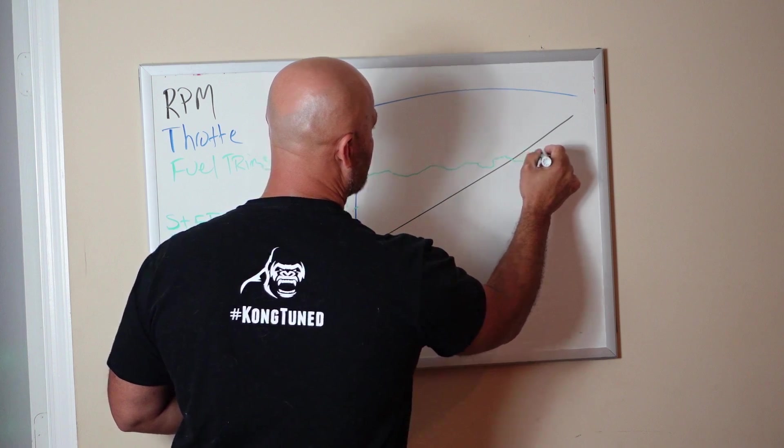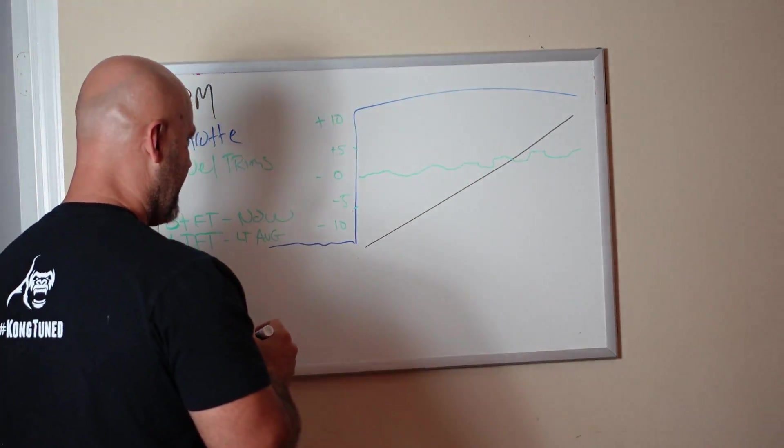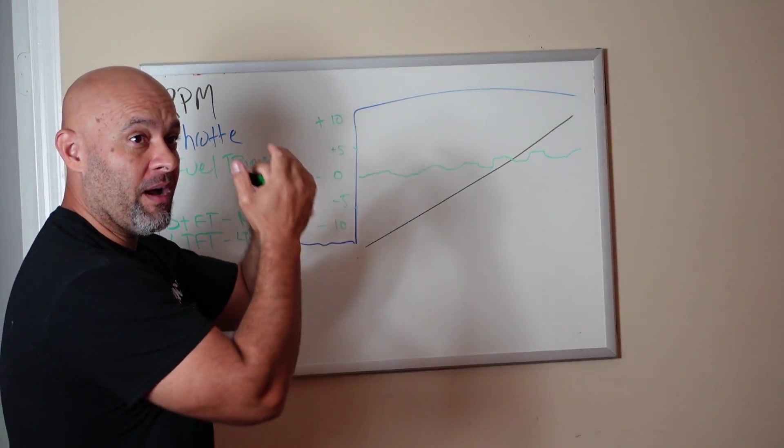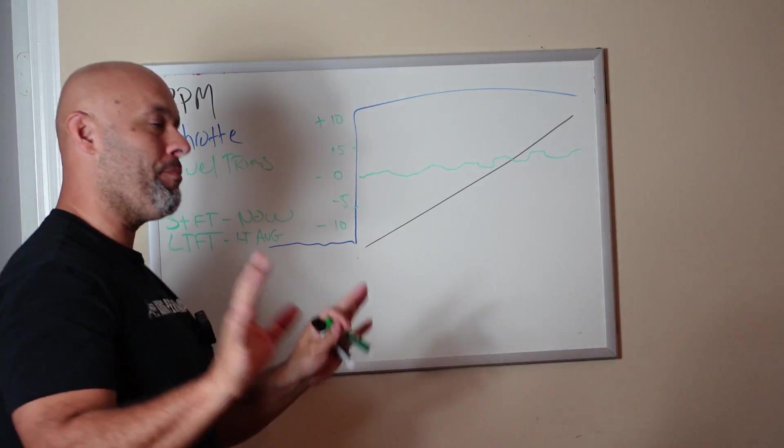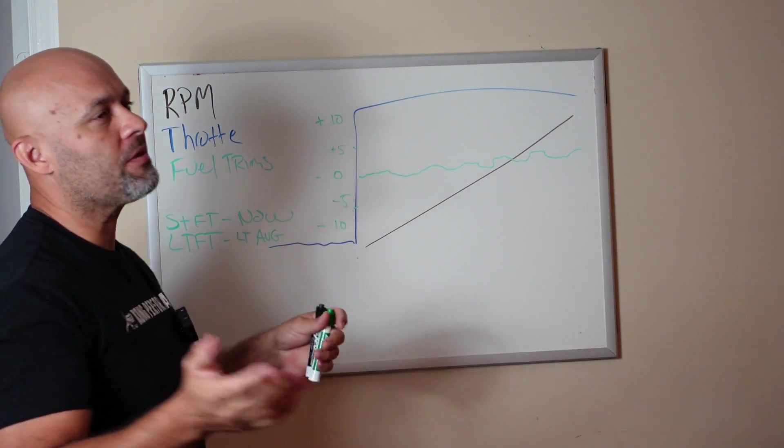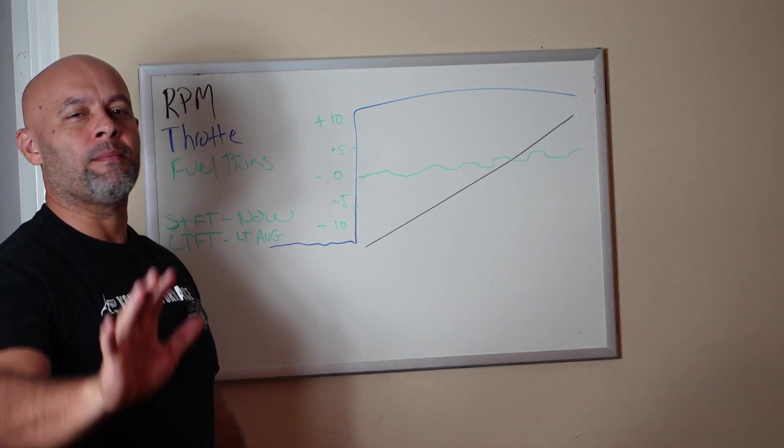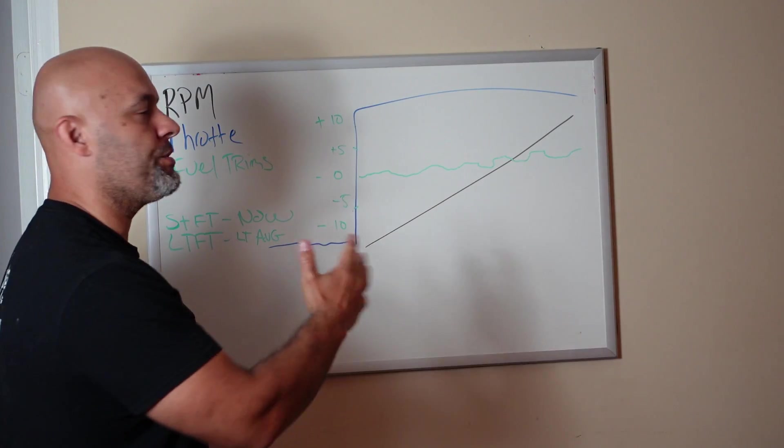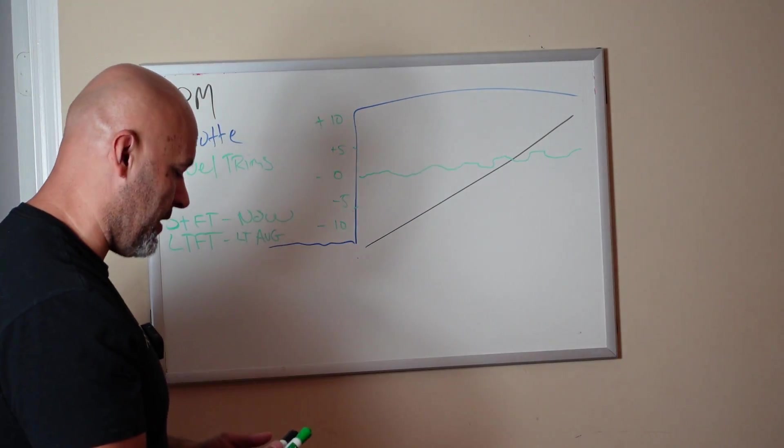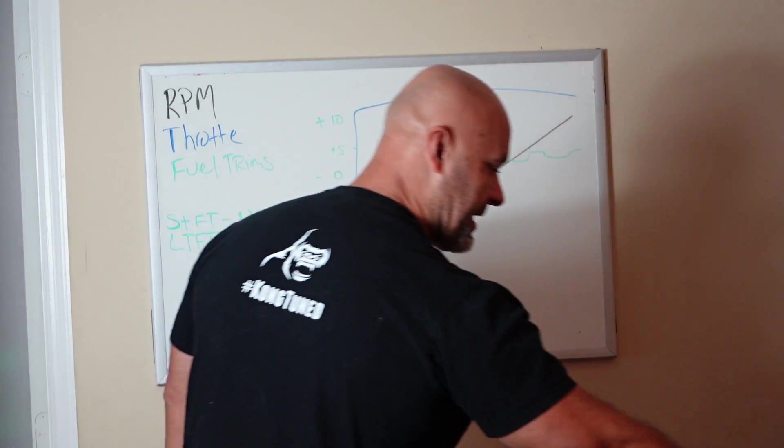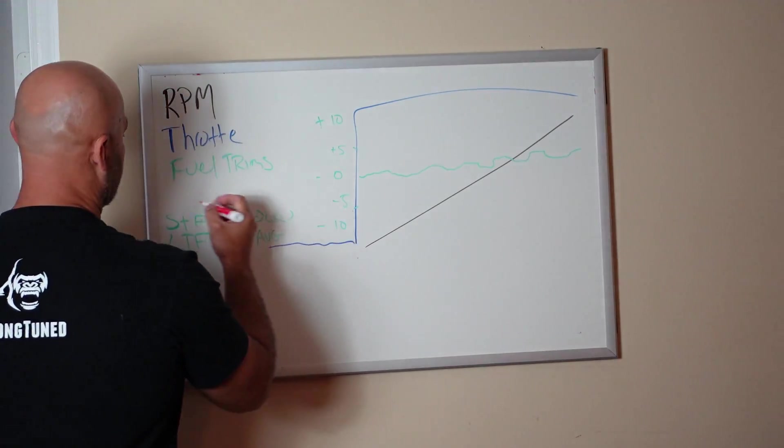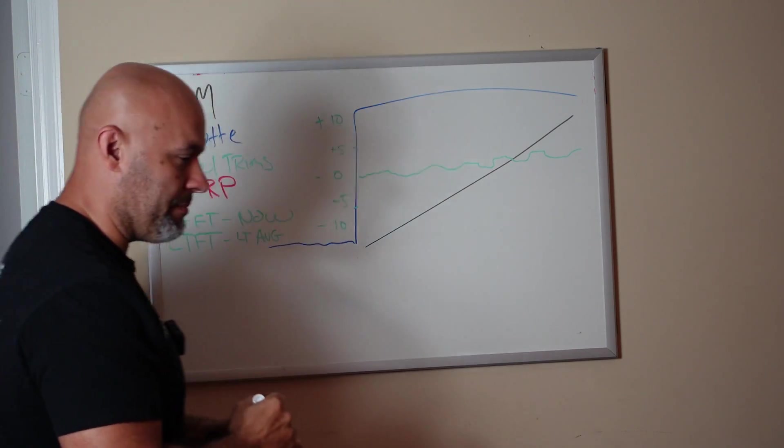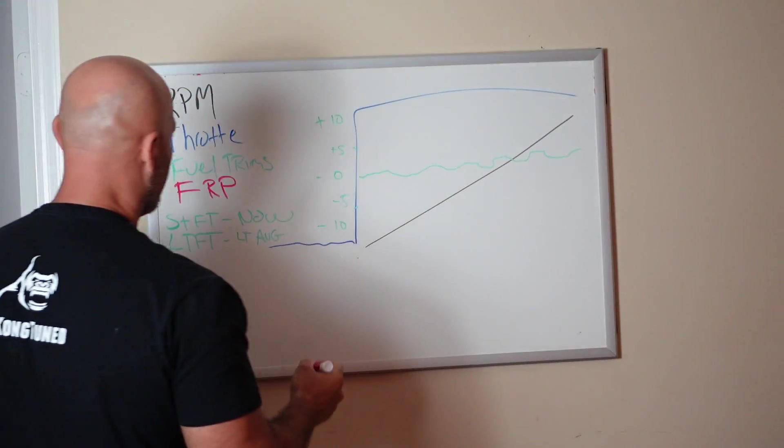But then on Gen 3 it starts kind of going flat, then comes down and gets flat. It's doing this weird flat curve. I go, huh, that's weird, it's not trimming as fast. Well, the fuel rail pressure sensor can modulate the pulse width of the injector to make up for the lack of fuel pressure. That's a very generic way of saying it.